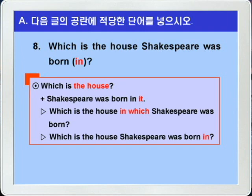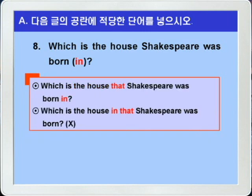the house와 Shakespeare 사이에 목적격 관계대명사를 넣는다면 전치사 in의 목적에 해당하는 목적격 that을 써서 'Which is the house that Shakespeare was born in', 이렇게 나타내는 것이 어감상 좋겠습니다. 그러나 이 경우 in을 앞으로 가져와서 'Which is the house in that Shakespeare was born' 이렇게 쓰면 틀린 문장이 되죠. 바로 앞 7번에서 주의하라고 했습니다. 정답을 확인해보고 9번으로 가겠습니다.